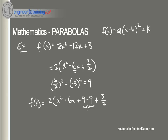Adding and subtracting 9 is net zero, so it doesn't affect the integrity of our equation — it just allows us to factor the x terms. So we get f(x) = 2[(x − 3)² − 9 + 3/2], which simplifies with the constant to give us 2[(x − 3)² − 15/2].